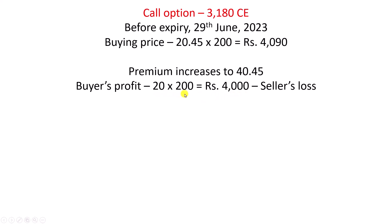How is this profit calculated? It is 20 into 200 which is 4000 rupees. How is this 20? The premium has increased to 40.45 from 20.45, so the premium has increased by 20 points. 20 into lot size is 4000 rupees — this is the buyer's profit and the seller's loss. Of course, you will be getting the original premium back along with this profit, so totally it is 8090 rupees. Because 40.45 is 20 points above 20.45, this plus this is what you will be getting in your account if you sell when the premium increases to 40.45.